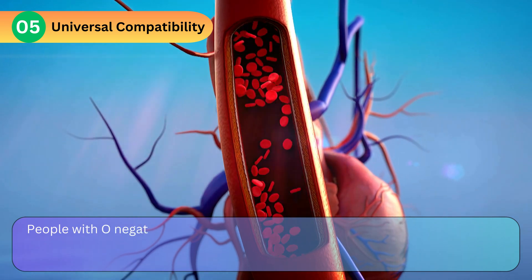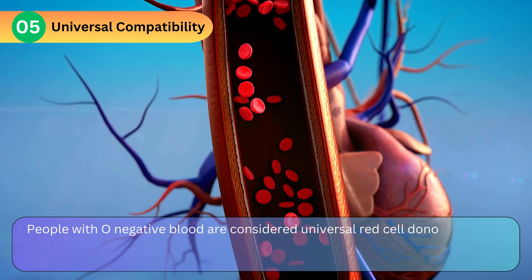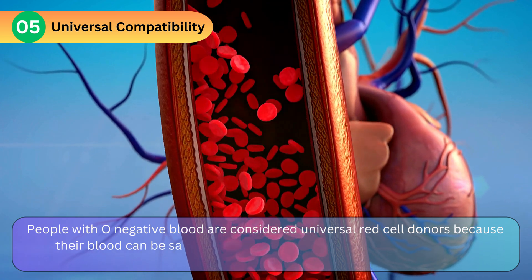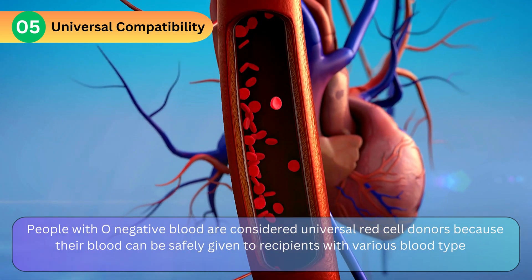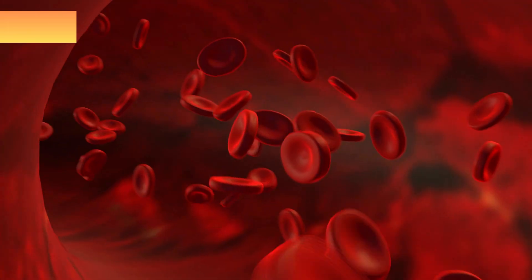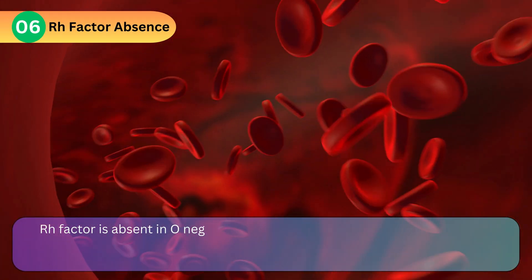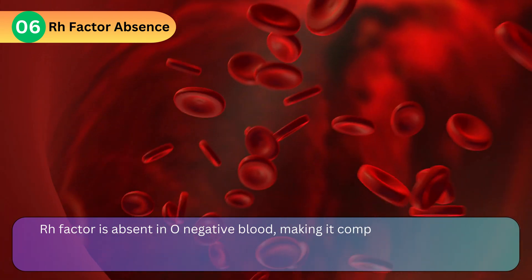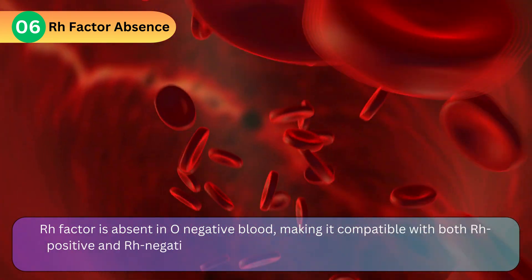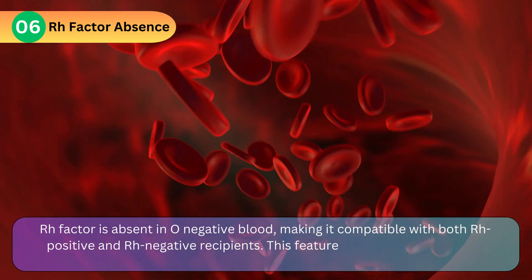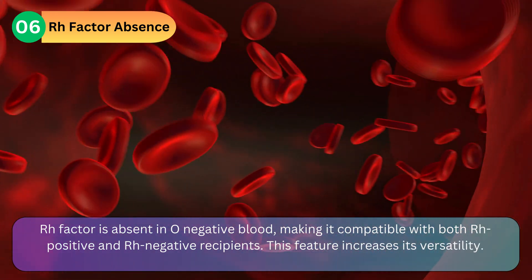Universal Compatibility: People with O negative blood are considered universal red cell donors because their blood can be safely given to recipients with various blood types. RH factor is absent in O negative blood, making it compatible with both RH positive and RH negative recipients, which increases its versatility.